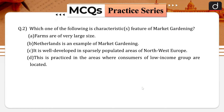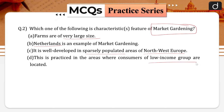Next question: which of the following is a characteristic feature of market gardening? Options: farms are of very large size; Netherlands is an example of market gardening; it is well developed in densely populated areas of Northwest Europe; it is practiced in areas where consumers of low income group are located. Correct answer is option B — Netherlands is an example of market gardening.